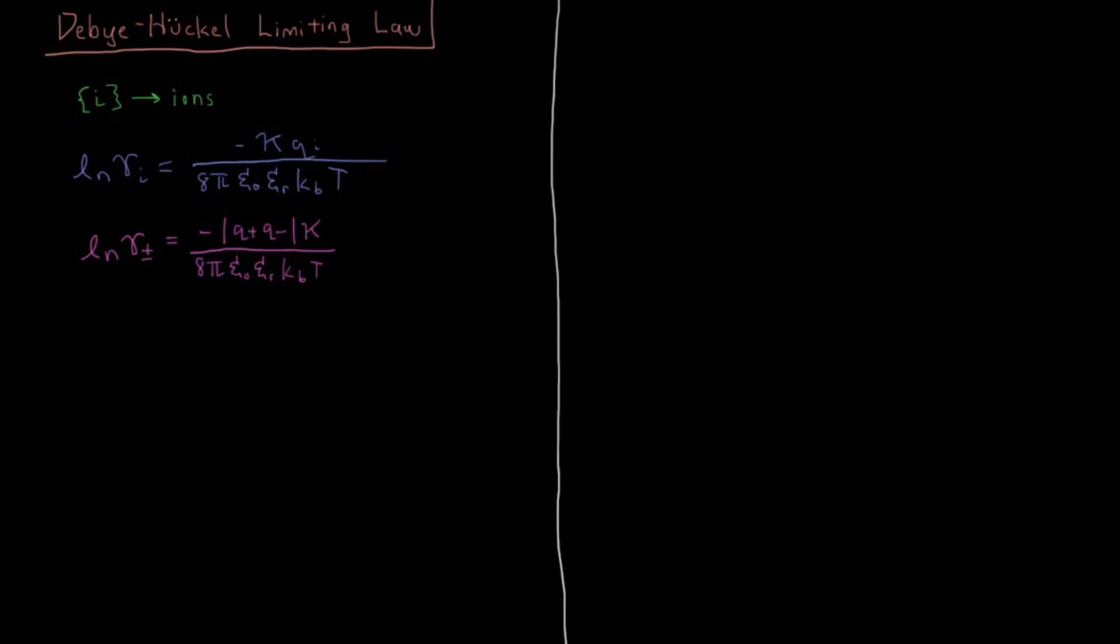First of all, we have this factor kappa. What is that? If you look at the value of 1 over kappa, that actually has a unit of distance, so this is called the Debye screening length or screening distance.